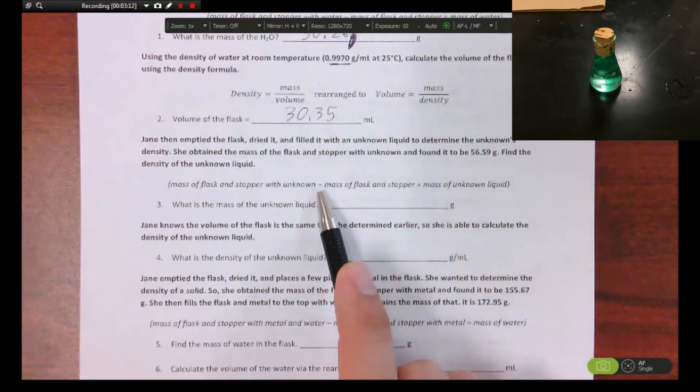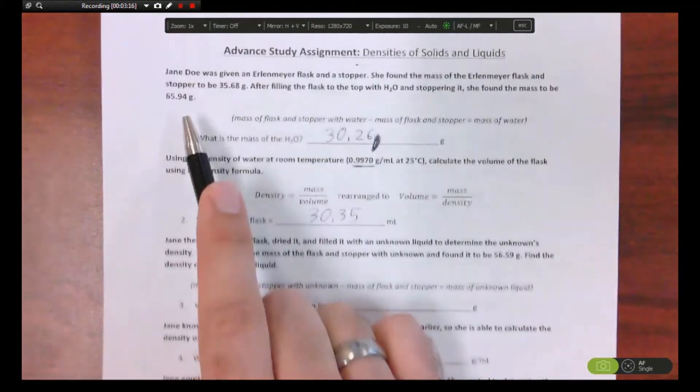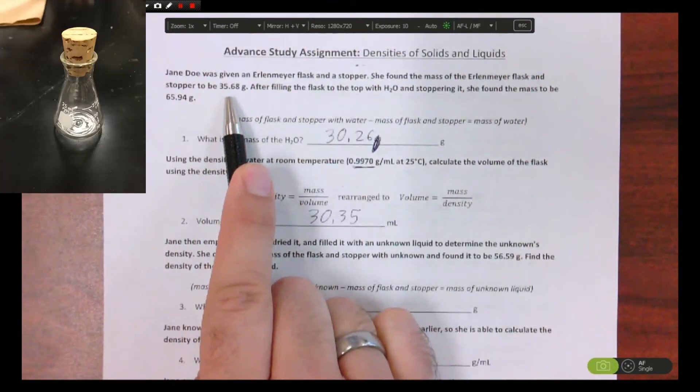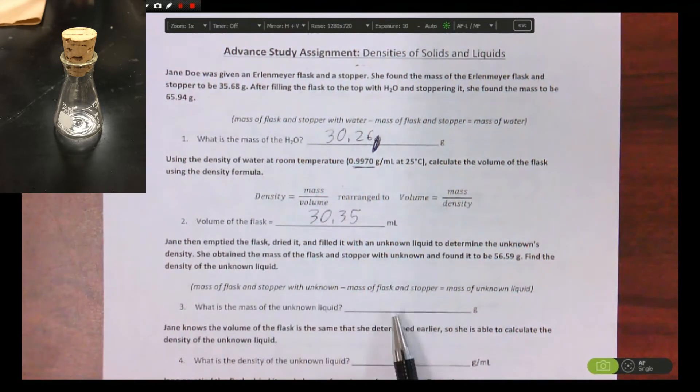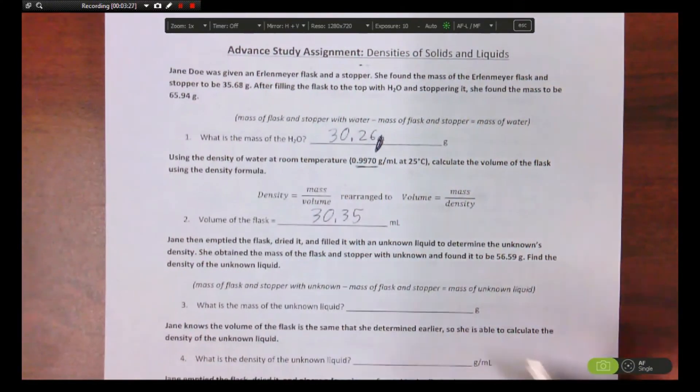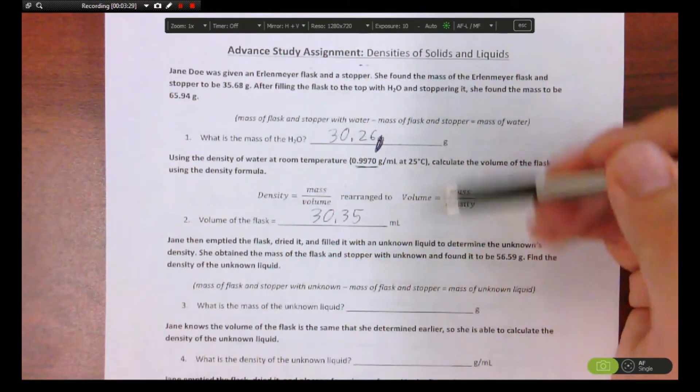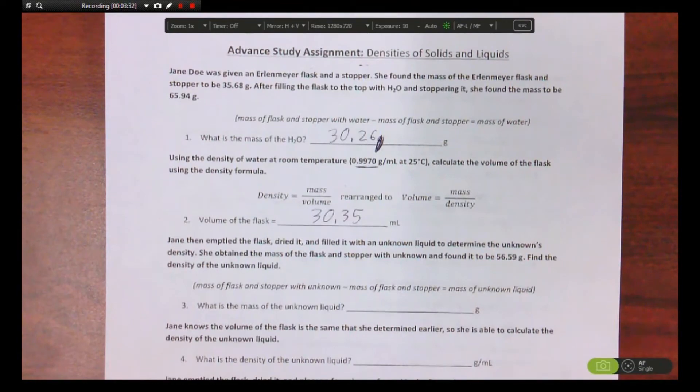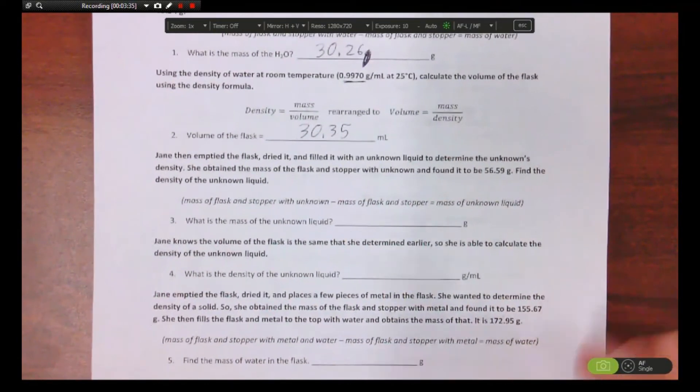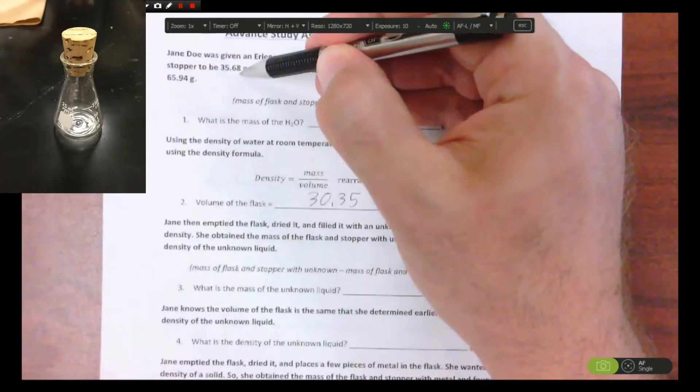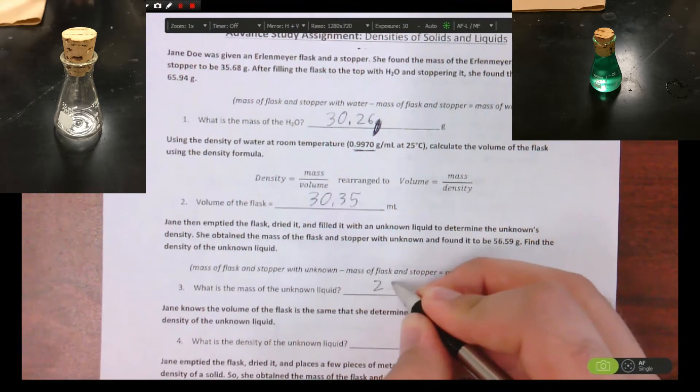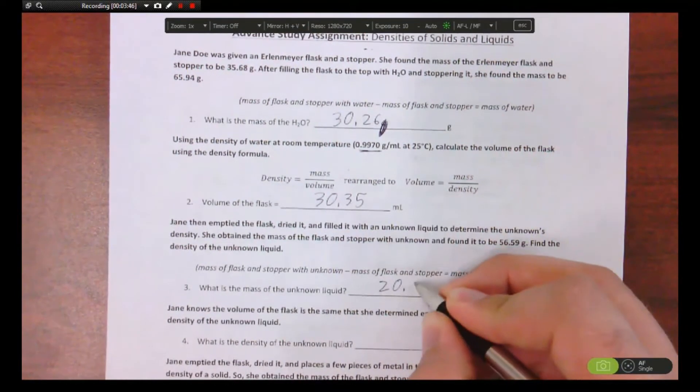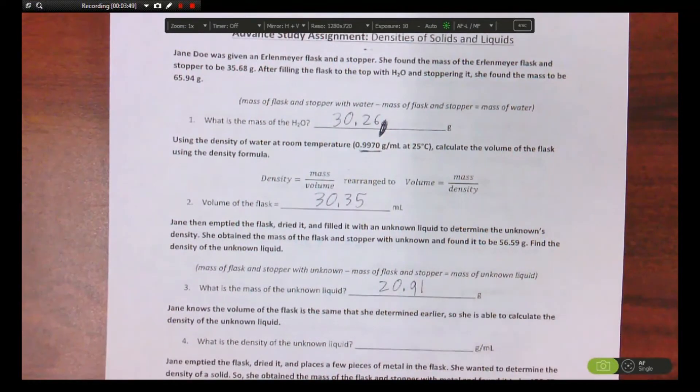So there she's using the same flask, so that mass is going to be the same. So this is where it gets a little tricky, you're going to have to extrapolate through previous paragraphs. If you haven't noticed, if you messed up up here earlier, it's going to mess you up down here. That's chemistry. So anyway, when you subtract the 35.68 and the 56.59, what'd you get? 20 point, I got 91. Y'all got 31, 91? Okay.